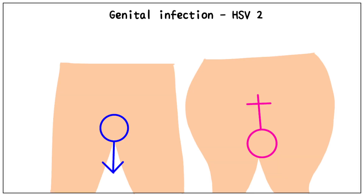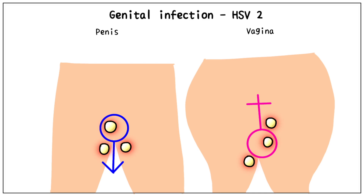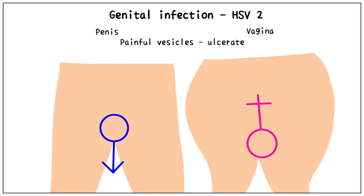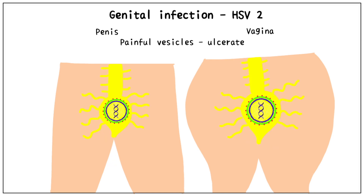Genital infection, which is below the waist, is caused by HSV2. In many cases it remains asymptomatic. Fever, malaise, and myalgia are usually seen. It affects the genitals — the penis in males and the vagina in females — causing the formation of painful vesicles which eventually form ulcers. These ulcers should not be confused with the syphilitic chancre. After the lesions heal, the virus remains latent in the sacral nerve ganglia until it gets a chance to cause another bout of infection.